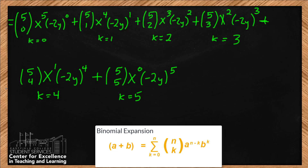We've gone through and replaced all the a's with x's, all the b's with negative 2y's, and all the n's with 5. Then we took the summation notation and expanded it all the way down. The next step is to evaluate each of these terms. So 5 choose 0 equals 1. You've got x to the 5th, and there are no negative 2y's — so the first term is just x to the 5th.